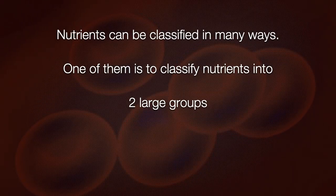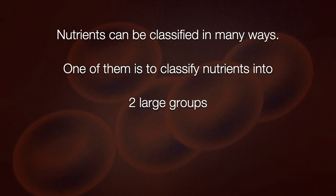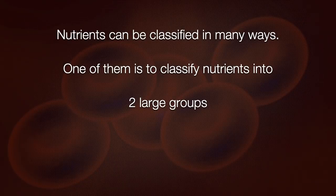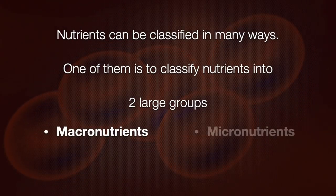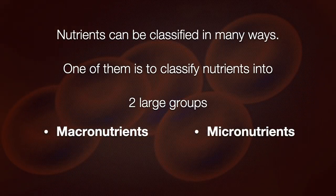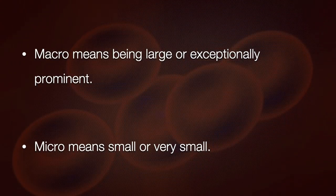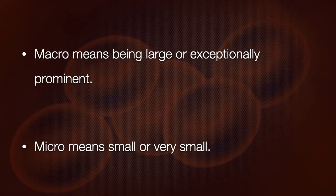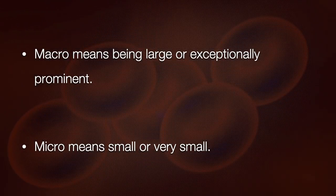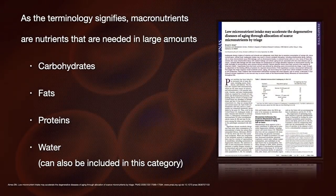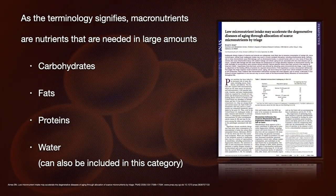Nutrients can be classified in many ways. One of them is to classify nutrients into two large groups: macronutrients and micronutrients. Macro means being large or exceptionally prominent, and micro means small or very small, as in microscope. Macronutrients are nutrients that are needed in large amounts. They are carbohydrates, fats, and proteins.